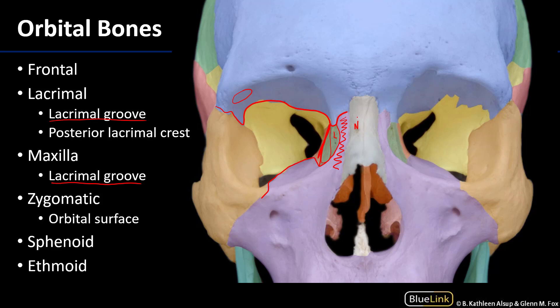This frontal process of the maxilla is named because it's reaching out and coming into contact with the frontal bone. You should think about process names because they might describe either the shape of the feature, the relationship of that feature to some other feature, or they might even be in direct contact with the feature for which they're named. Just adjacent to the lacrimal groove of the lacrimal bone, there's another groove on the maxilla also called the lacrimal groove, and the two lacrimal grooves are adjacent to one another.